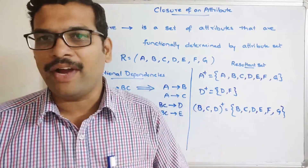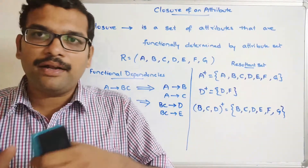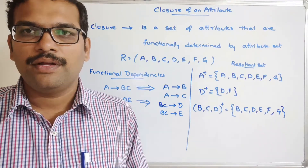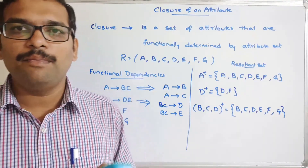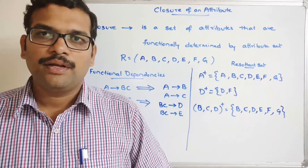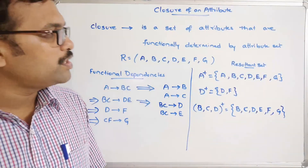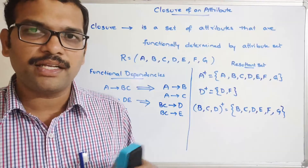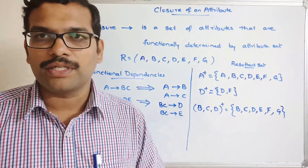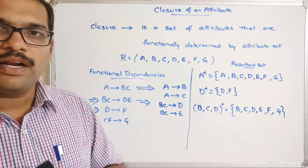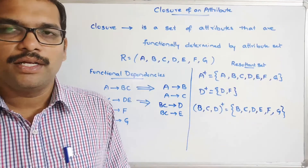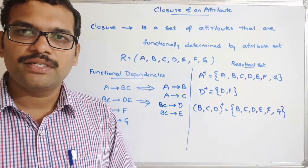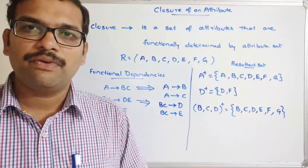What is the purpose of finding closures? Closures help us determine the super keys and candidate keys available in a given relation. In the next session, we will see more details about finding super keys and candidate keys using closures. If you have doubts about closure calculation, post them in the comments. If you enjoyed this session, like, share, and subscribe. Thanks for watching.